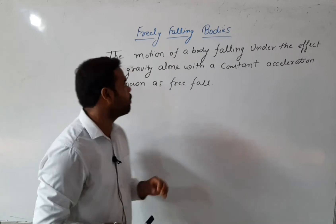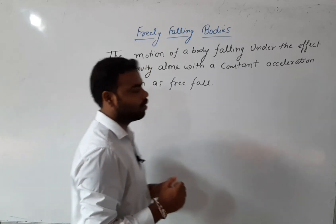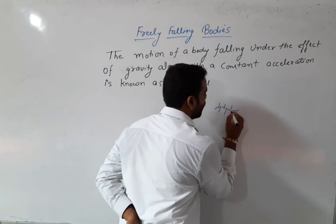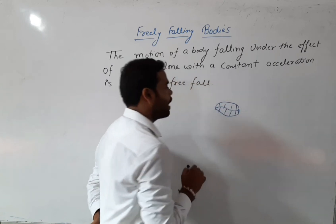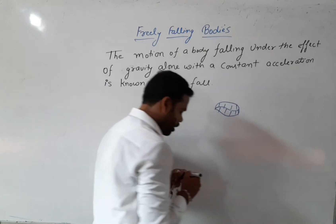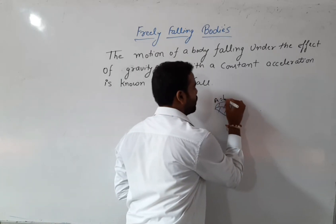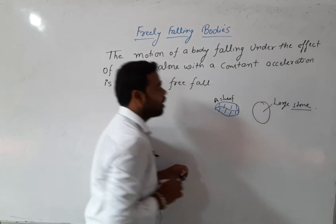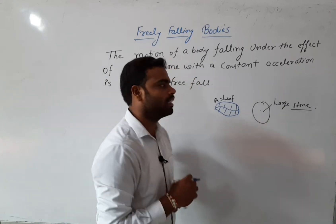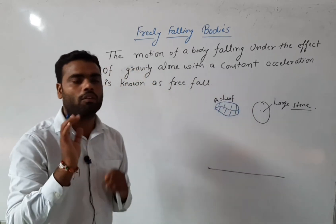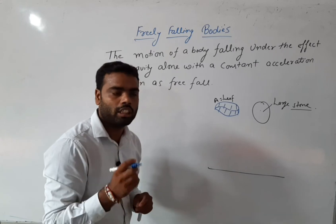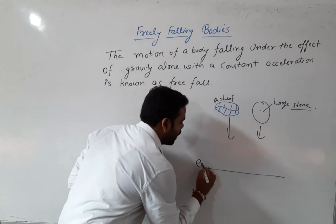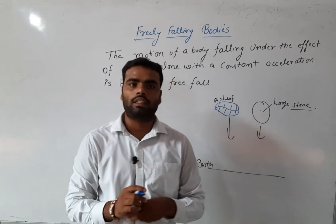So the motion of a body falling under the effect of gravity alone with a constant acceleration is known as free fall of a body. For example, if we take two bodies — first one is a leaf, and the second is a large stone. We leave both bodies to fall from a certain height, only in the presence of gravity, with no air resistance. Then both bodies will fall on the earth at the same time.